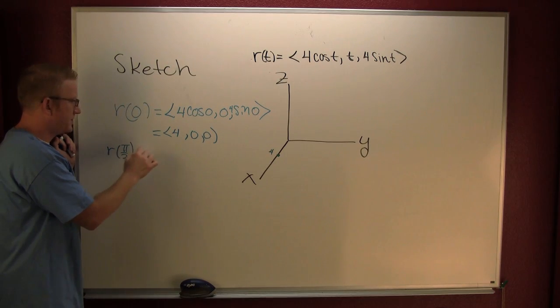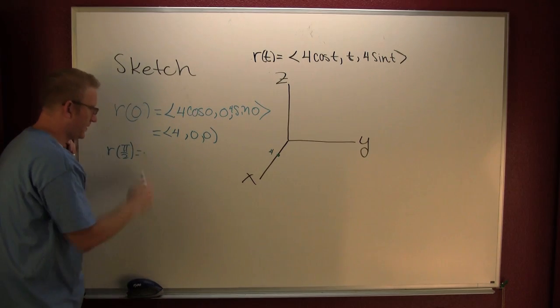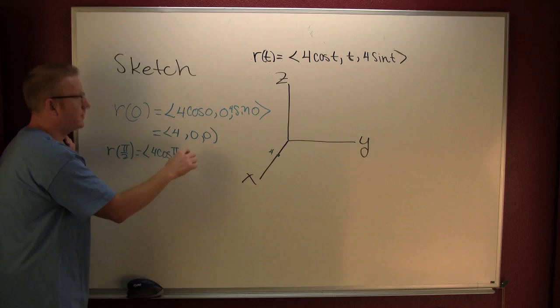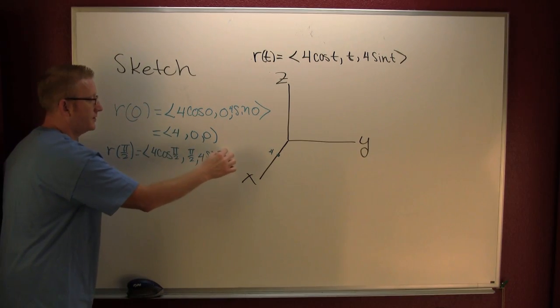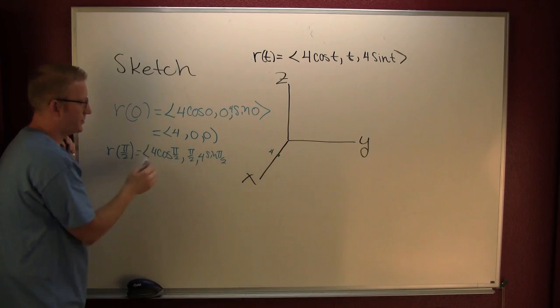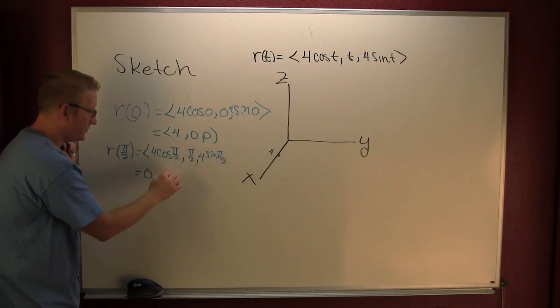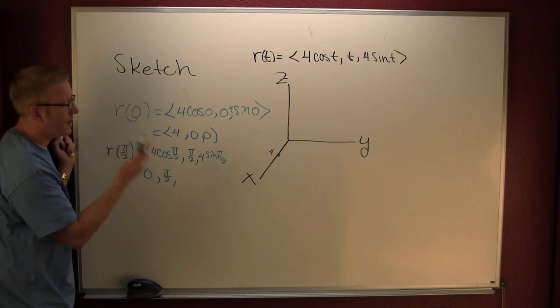Pi over 2. So then, this is 4 cosine pi over 2, pi over 2, and 4 sine pi over 2. Sure. Cosine pi over 2, I think zero. Then we're going to have pi over 2 on our y. And then on our z, we see that we have 4.